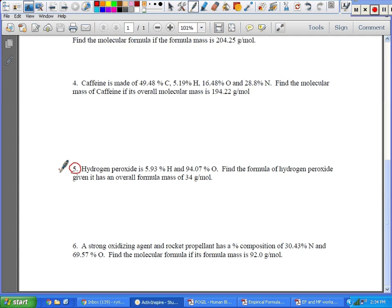The first thing it tells you is hydrogen peroxide is 5.93% hydrogen and 94.07% oxygen. And then it says, find the formula of hydrogen peroxide given it has an overall formula mass of 34 grams per mole. Now, the one thing I don't like about this question is it's missing a word. On my test, it will have the word molecular. So I will specifically say find the molecular formula for hydrogen peroxide.